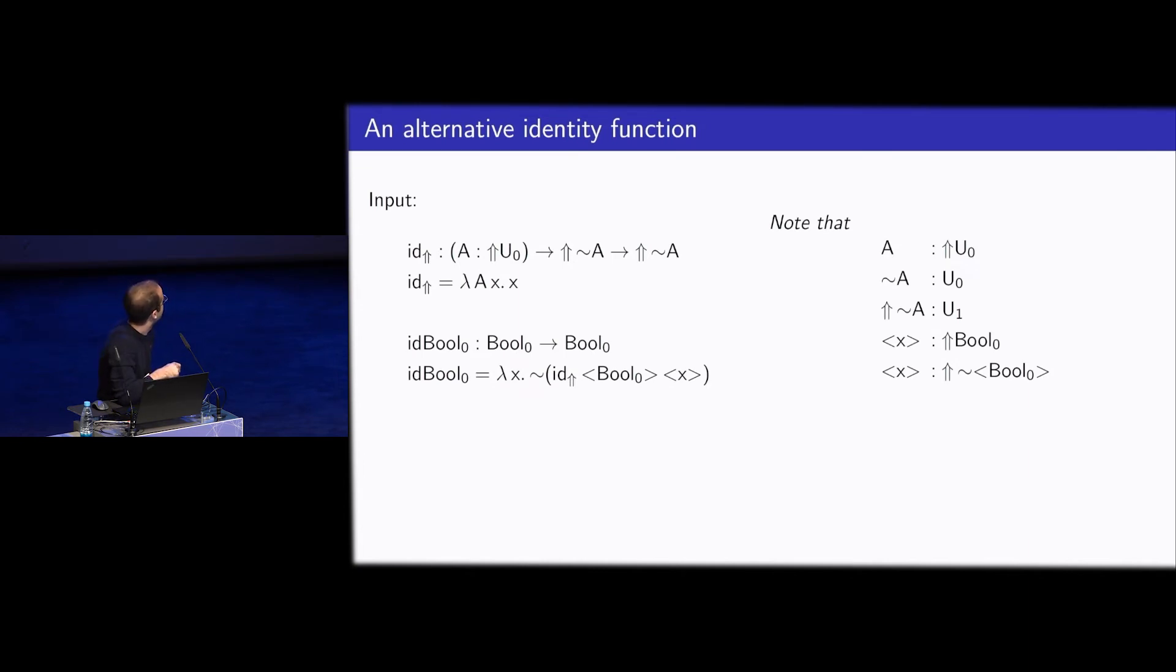The point is that this example is only well typed up to the previously mentioned definitional equalities. So here, I have the quotation of this expression has this type. But actually, I expect some type of this form. So I have to rely on the rule which says that quotations and splicing are definitional isomorphisms. And I should mention that splicing binds stronger than anything else. This is kind of borrowed from the MetaML notation of splicing. And if we do staging here, then we once again just get an ordinary identity function.